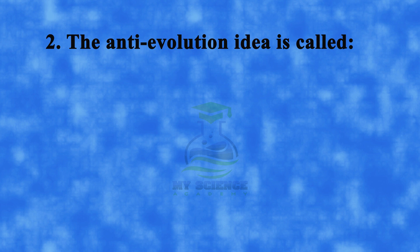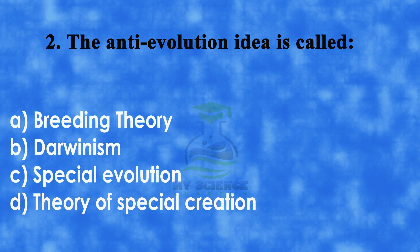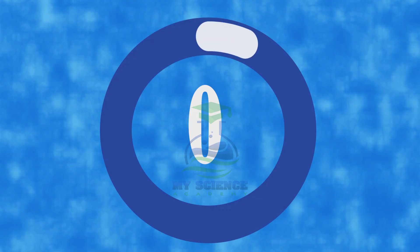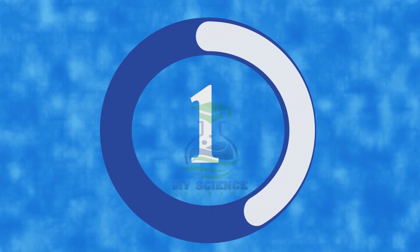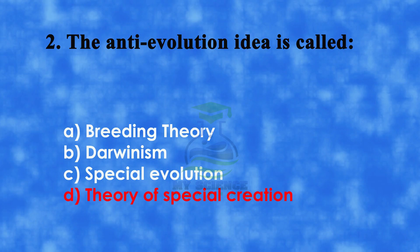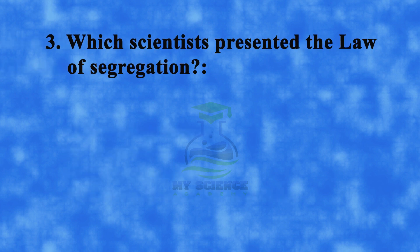Question 2: The anti-evolution idea is called — A. Breeding theory, B. Darwinism, C. Special evolution, or D. Theory of special creation. Correct answer is D. Theory of special creation.